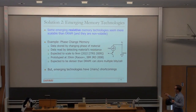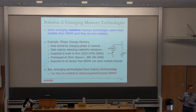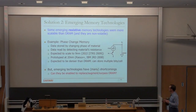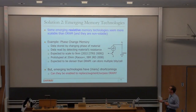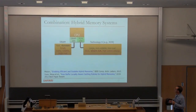Emerging memory technologies have many shortcomings as well. The key question is: can we somehow enable them to replace, augment, or maybe even surpass DRAM? Why surpass? Because some of them are non-volatile, and DRAM is not. By getting rid of refresh, you can make parts of it look non-volatile, but full non-volatility is not easy. This is a more emerging area. We're going to cover some works in this area.